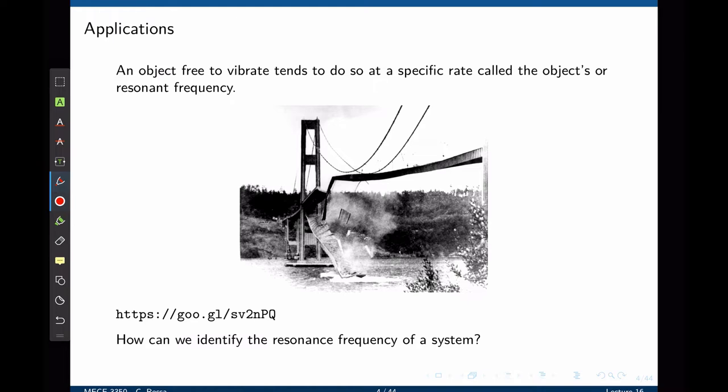Frequency response analysis has also many applications in other fields. Here is one example — I encourage you to click on this link and watch this video first. You can see that this imposing bridge is collapsing because of the wind. What is making the bridge collapse is not necessarily the intensity of the wind, but actually the frequency of vibrations induced by the wind. It turns out that the wind makes this structure vibrate at the resonance frequency, and at the resonance frequency the amplitude of these vibrations is the highest. It doesn't take a lot of energy to destroy the bridge; what it takes is the right frequency excitation, where the magnitude of the output is the highest. This is a known problem in civil engineering design.